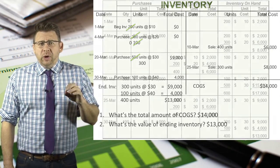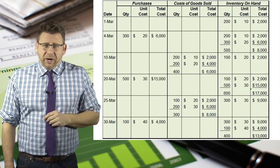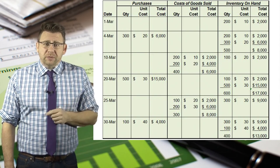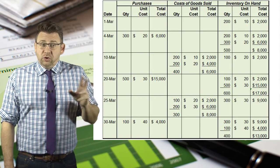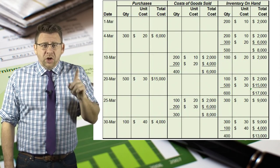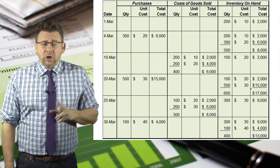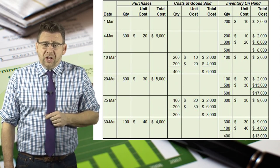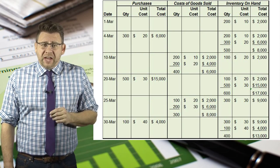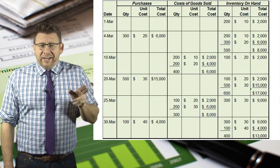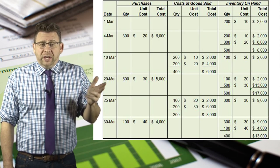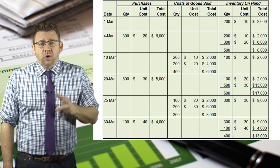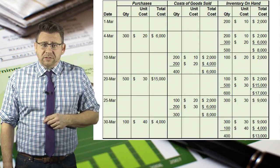Finally, if we were completing a perpetual inventory record, you can see the purchases were entered in the purchase columns. The units sold are recorded and notice that they total the cost of goods sold already computed: March 10, $6,000 and March 25, $8,000. Ending inventory is a running total that results in 400 units of inventory with a cost of $13,000.